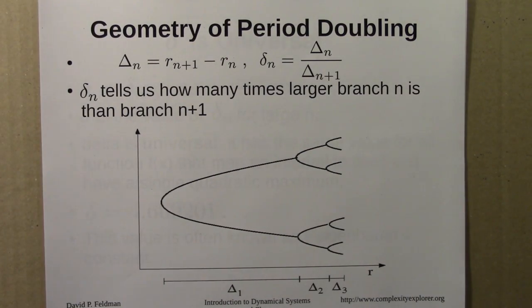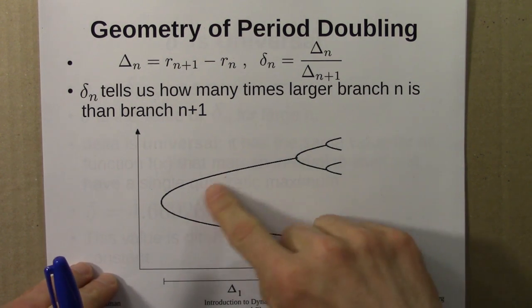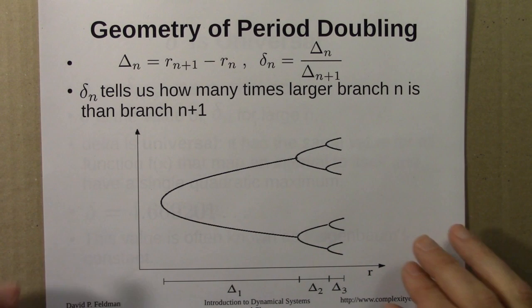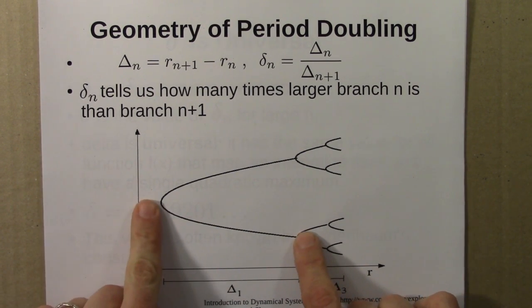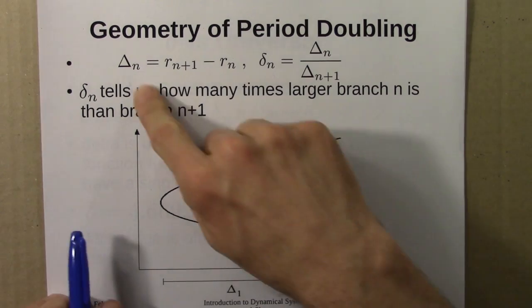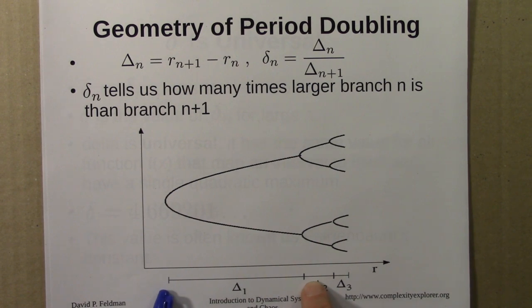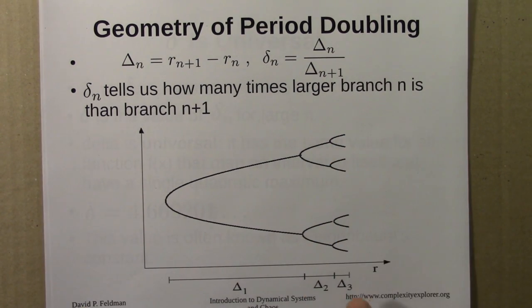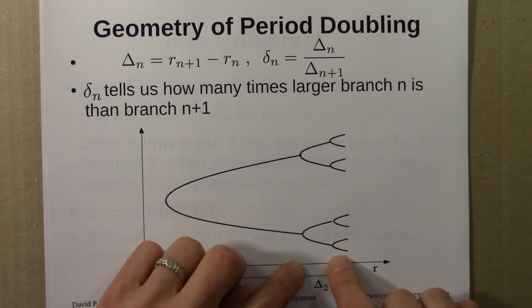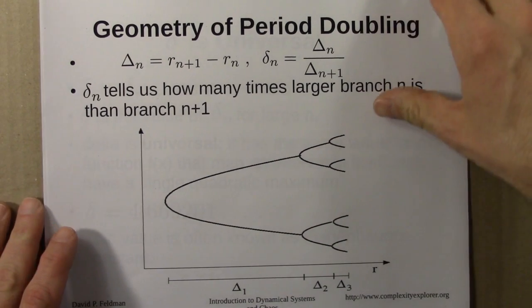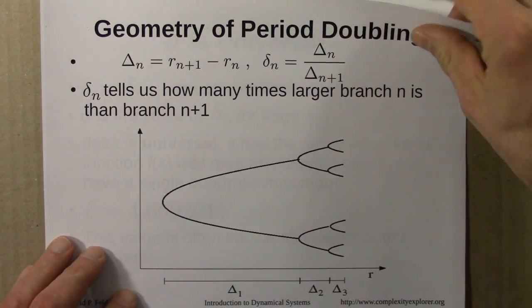That led us to look geometrically at period doubling. Here's just a sketch of period 2 doubling to 4 doubling to 8. We asked what we can say geometrically about this. So define delta_1 to be the length of this branch, delta_2 to be the length of that branch, delta_3 to be the length of that branch. The r values — r1, r2, r3 — are the values at which these bifurcations occur. Then delta_n, lowercase delta_n, is just the ratio of one length to the next, telling us how many times larger one branch is than the next. We calculated it for a few different functions.